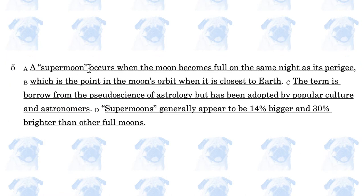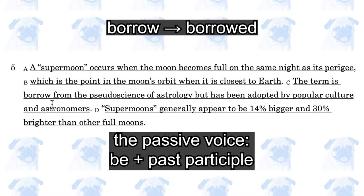A supermoon occurs when the moon becomes full on the same night as its perigee, which is the point in the moon's orbit when it is closest to Earth. The error is 'the term is boro' — it should be 'the term is boroed.' You need a past participle form because this sentence is in the passive voice.